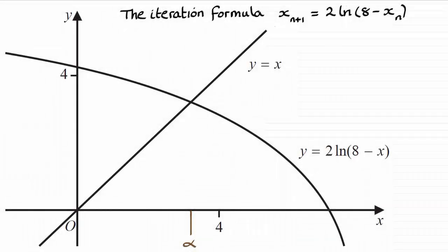For this question we're told that the student uses this iterative formula to work out an approximation for the root where the graph y equals x crosses the graph y equals 2 times the natural log of 8 minus x. That root being alpha. And we've got to say whether using this first approximation of x1 equaling 4 will give us an approximation to alpha.